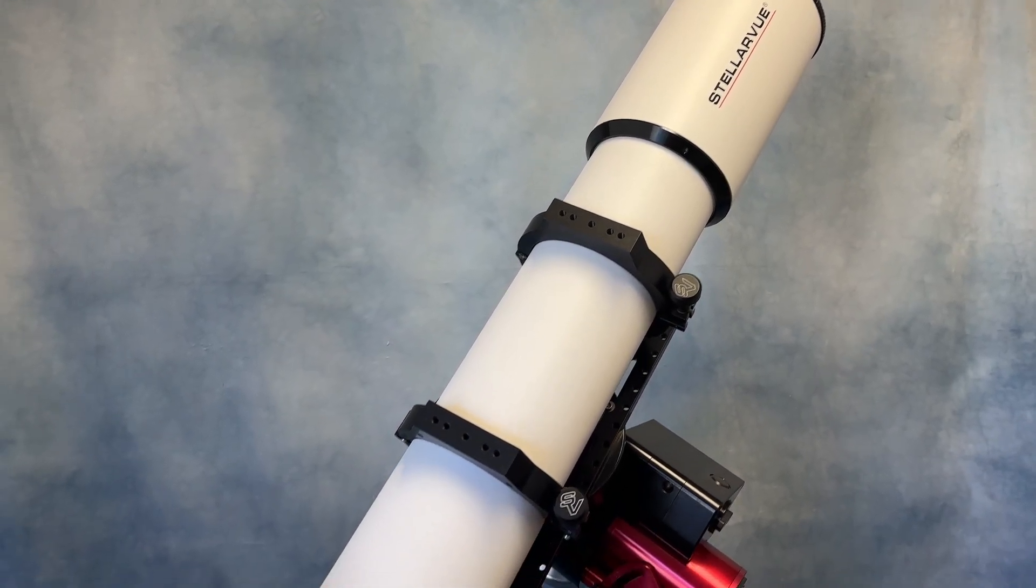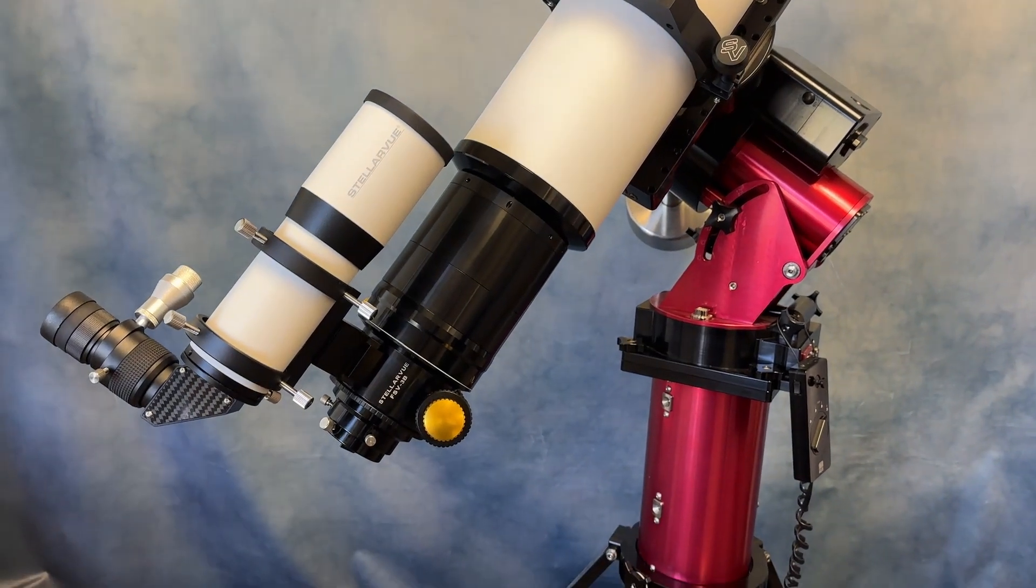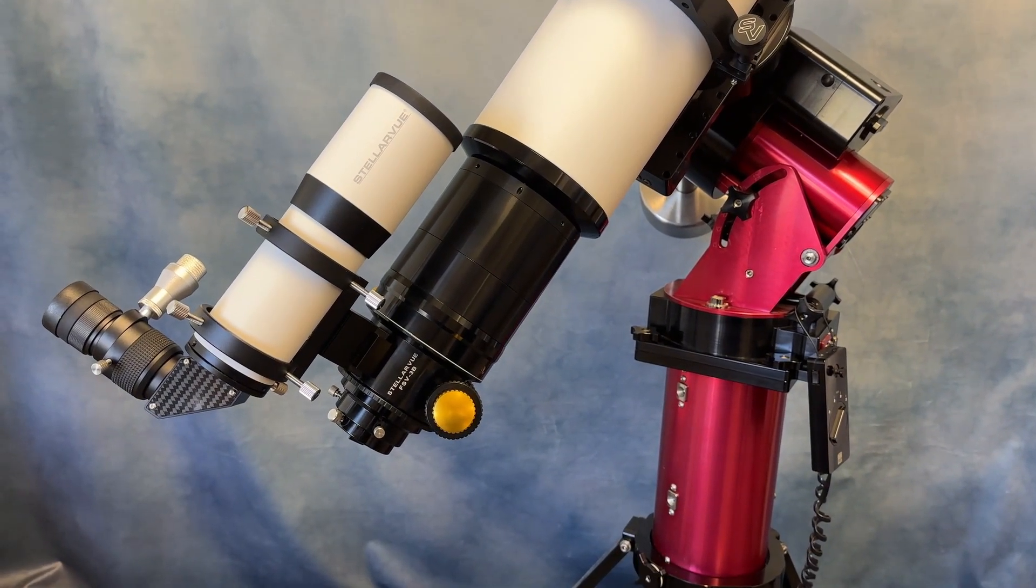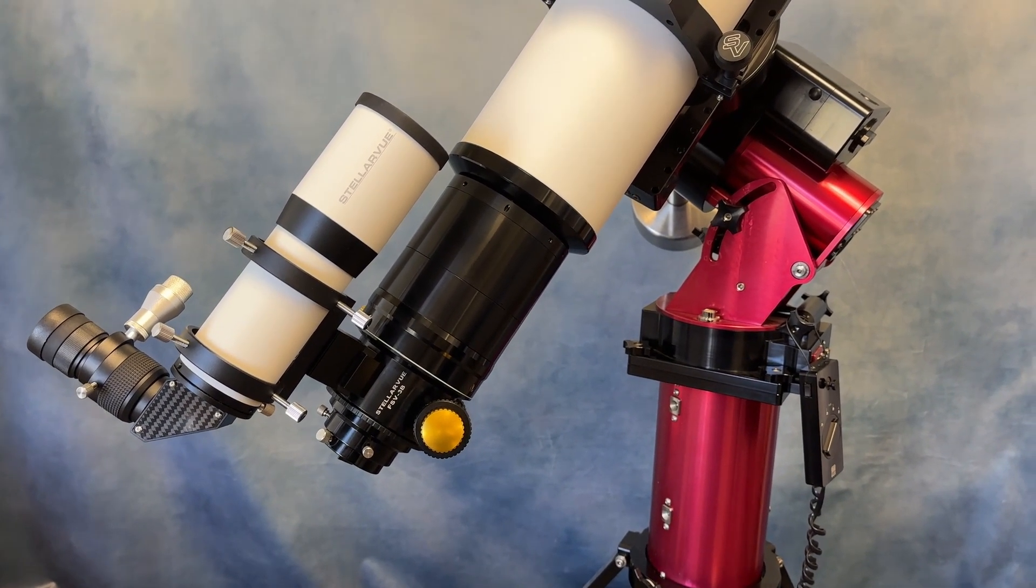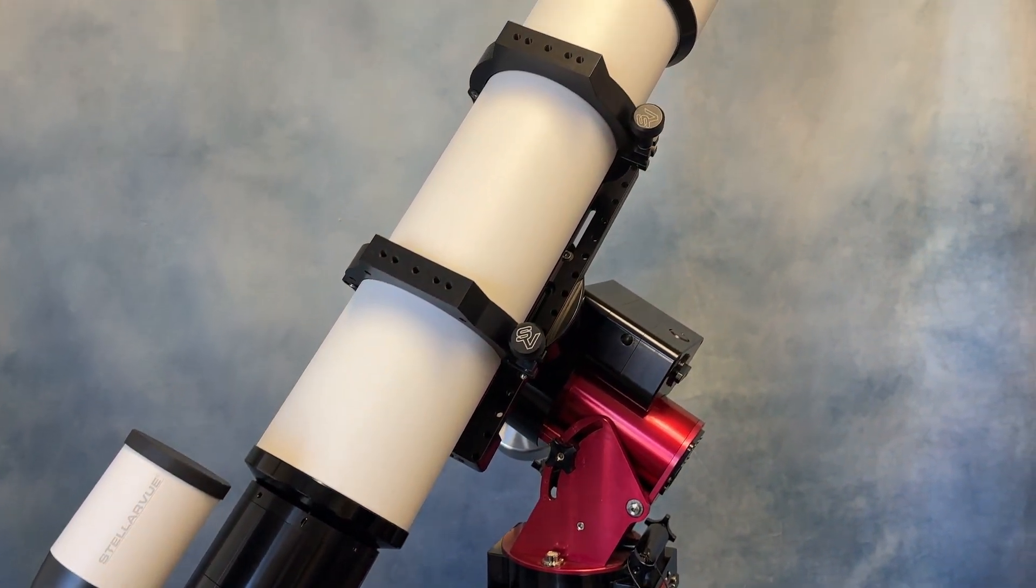The Stellarvue SVX-127D is the sharpest 5-inch refractor we have ever made. Today I want to take you behind the scenes and show you what goes into producing our SVX telescope objectives.